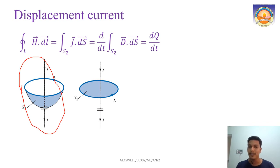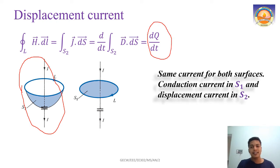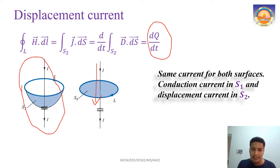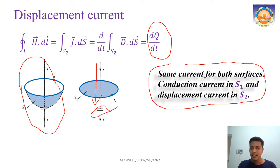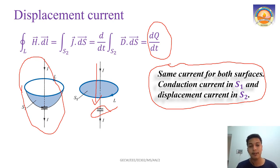The meaning here is that when a capacitor and conductor are connected, the current flows through the conductor as conduction current and through the capacitor as displacement current — and both are equal in magnitude. The same current that flows as conduction current through the conductor flows as displacement current inside the capacitor. Current flowing inside a capacitor is an example of displacement current, caused by the change in electric field.